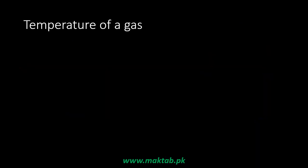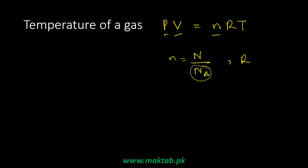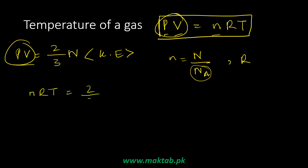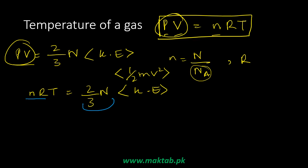The ideal gas equation from experimental data is PV = nRT, where P is pressure, V is volume, n is the number of moles (equal to number of molecules divided by Avogadro's number), R is the universal gas constant. We derived PV = (2/3)N × KE. Equating these: nRT = (2/3)N × (1/2)mv². Since n, R, and (2/3)N are all constants, temperature is directly proportional to the average kinetic energy of the molecules.